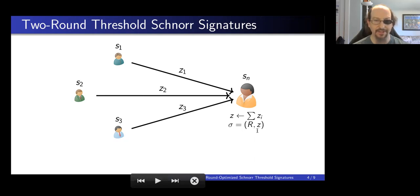And then the signature is just the capital R, which is the product of the commitment shares, and Z, which is the sum of the response shares. This is a two-round protocol. But interestingly, the first round had no dependency on the message. So the first round can actually be pre-computed. The participants can just generate these random blinding factors, produce commitments to them, and just send them in advance. And then when the message shows up that needs signing, it's just a one-round protocol. So that's a very useful feature of this kind of setup.